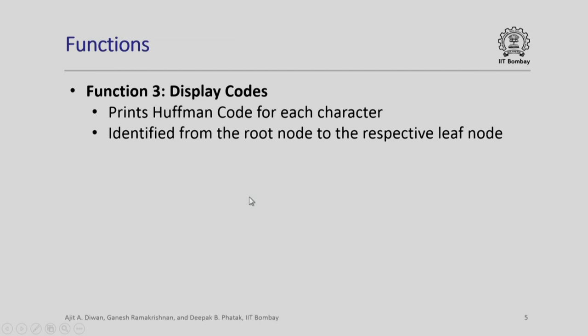We will of course require an additional function to display codes. These will print the Huffman code for each character and all that we need to do is we identify from the root node to the respective leaf node to get the code for that particular character which appears in the leaf node.